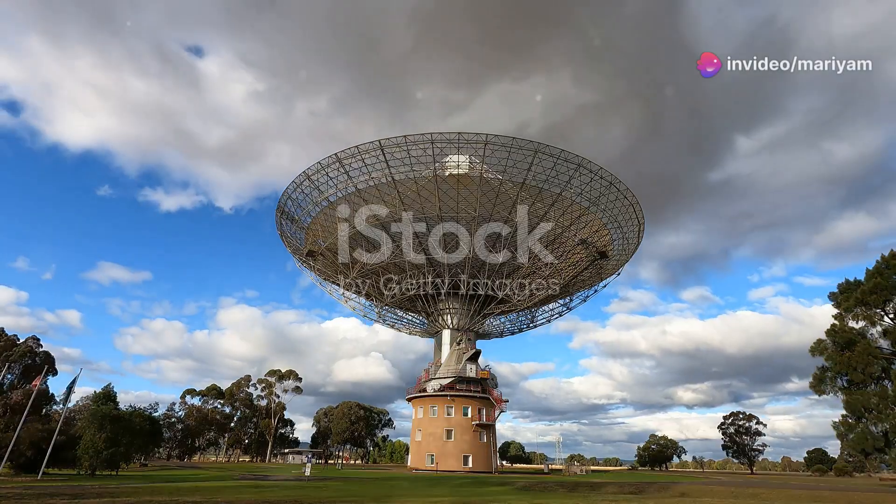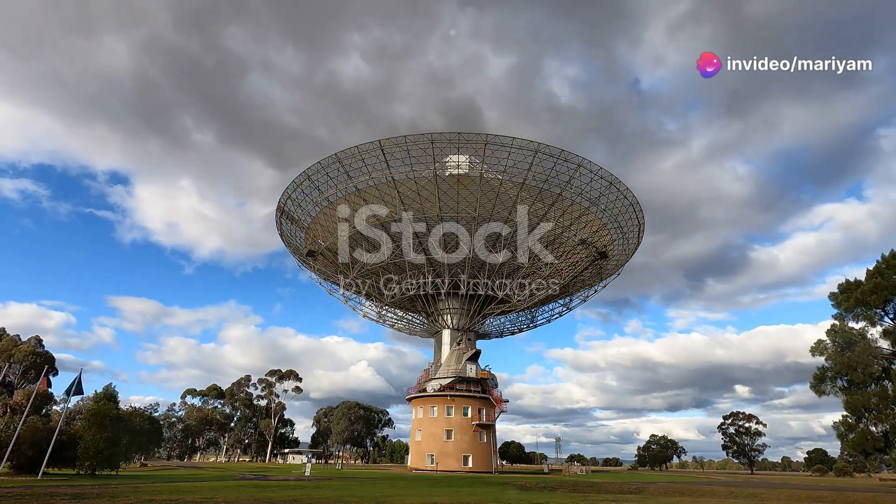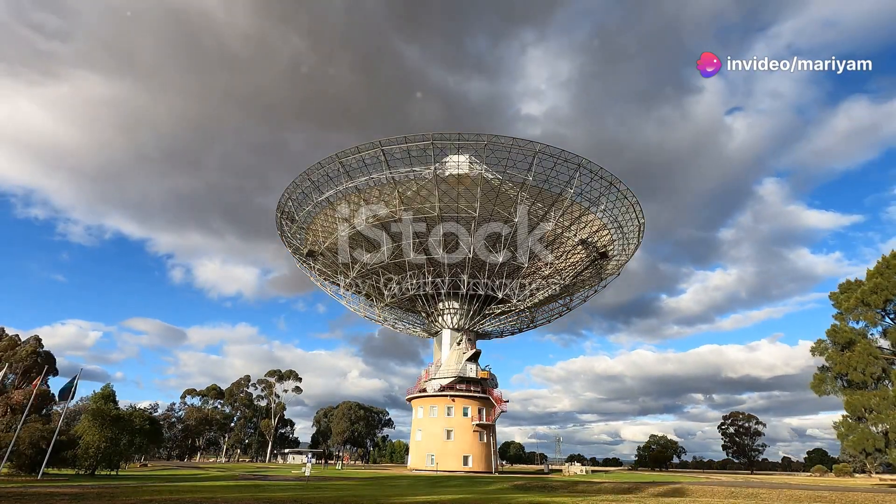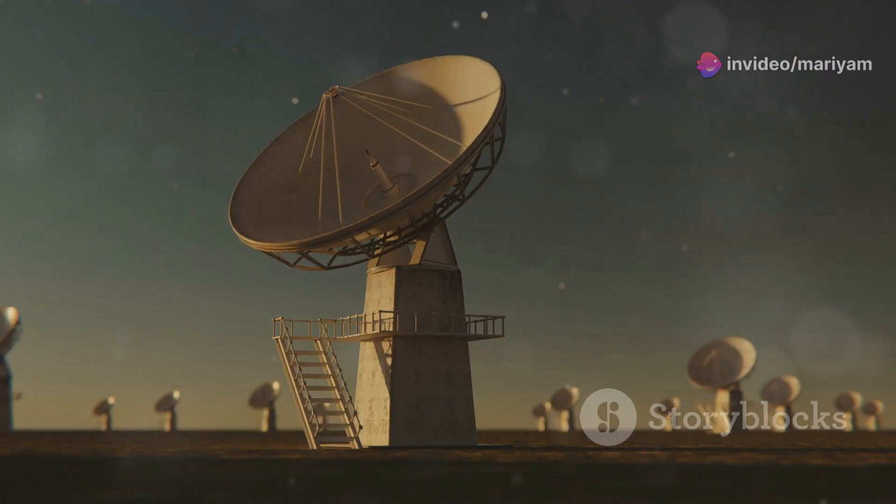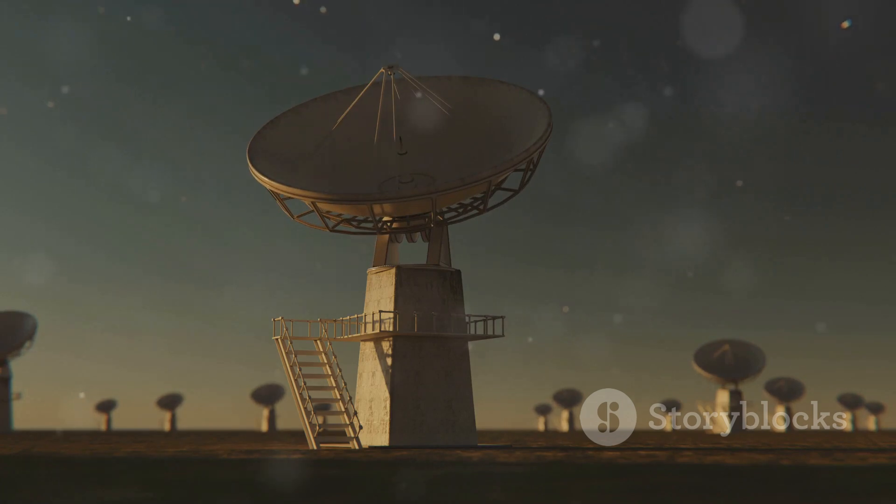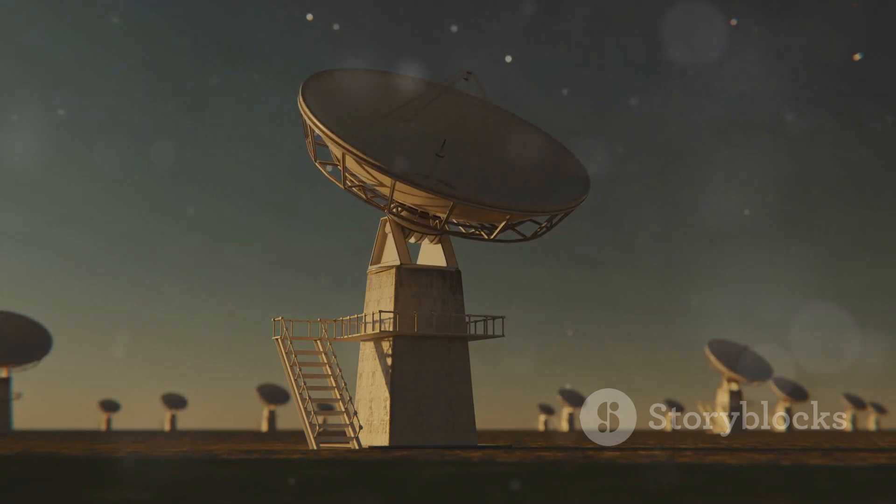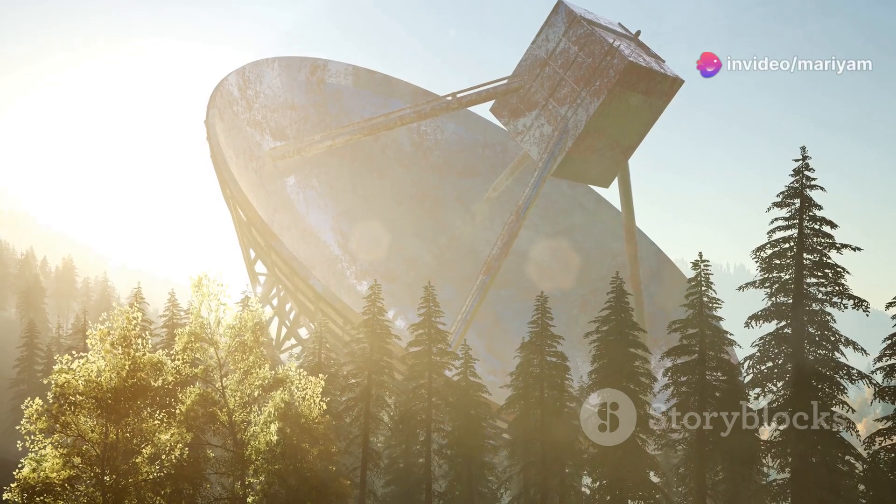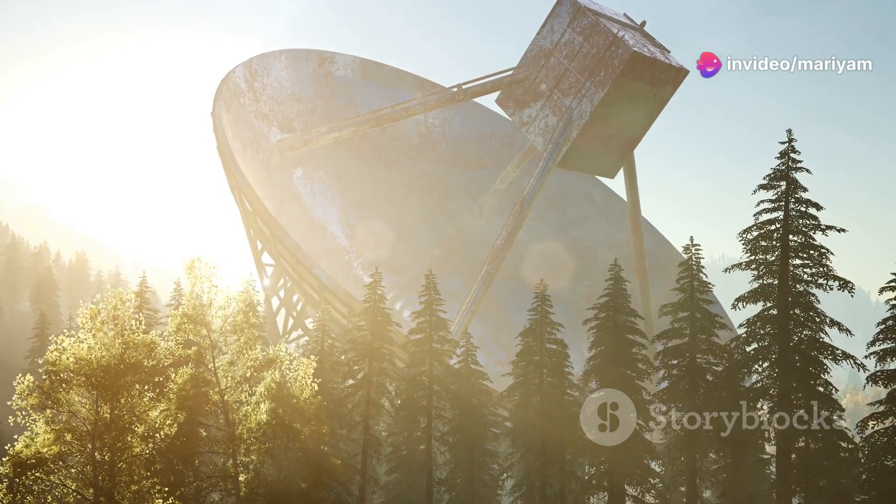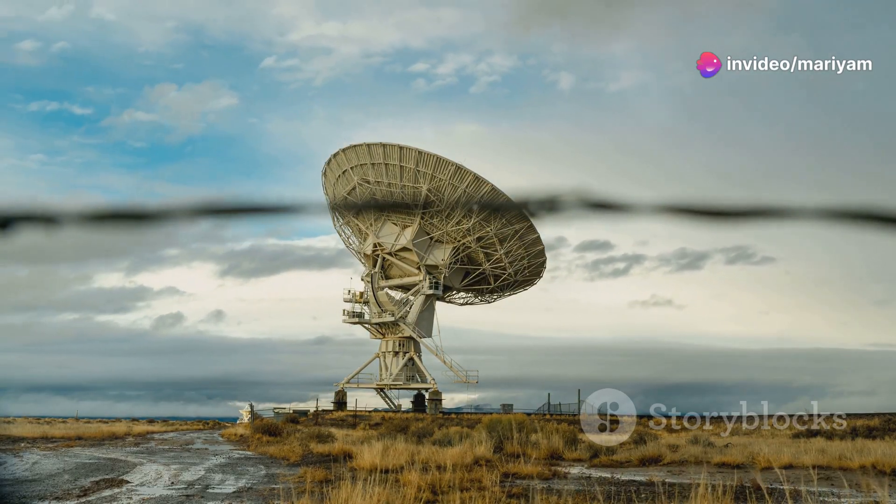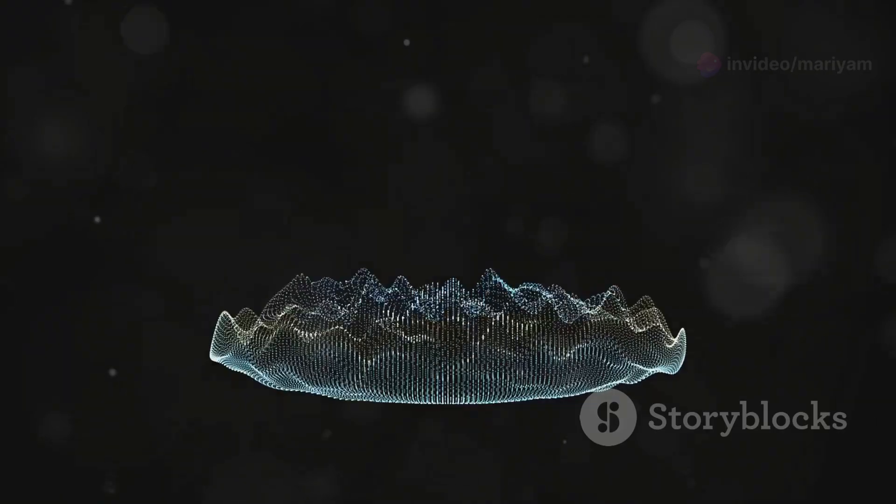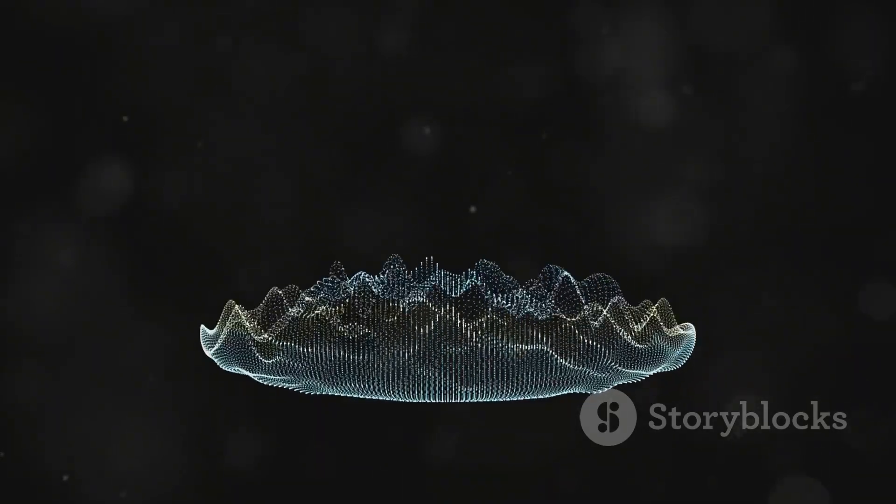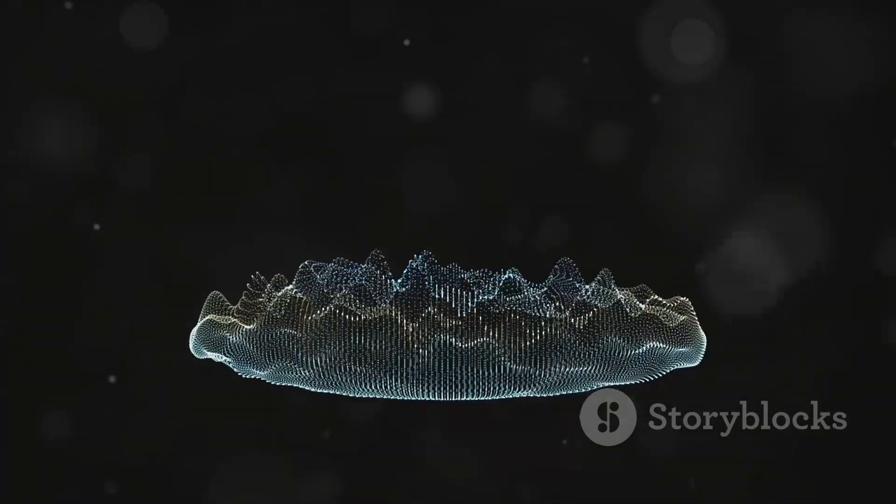The story of pulsars discovery is a testament to the power of curiosity and careful observation. In 1967, a young graduate student named Jocelyn Bell Burnell was working on her PhD at Cambridge University. She was analyzing data from a radio telescope she had helped to build. While sifting through the data, Bell noticed something unusual. There was a signal that appeared regularly, about once every 1.3 seconds.